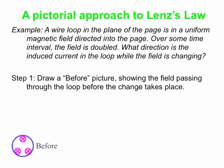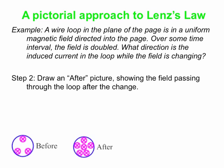Let's apply that to our particular example. Here's our loop — a blue loop in the plane of the screen — and we've got a magnetic field directed into the screen. That's our before picture: some field lines passing through the loop into the screen. Then we double the field, so now we've got twice as many field lines passing through the loop. That's our after picture. Clearly the before and after pictures are different, so there is something to oppose here.